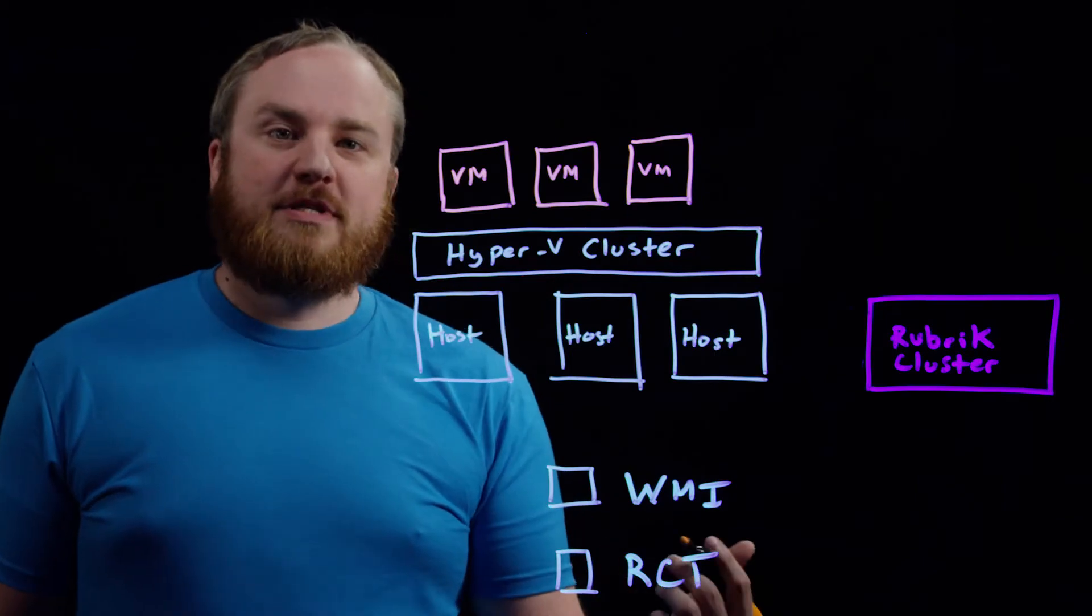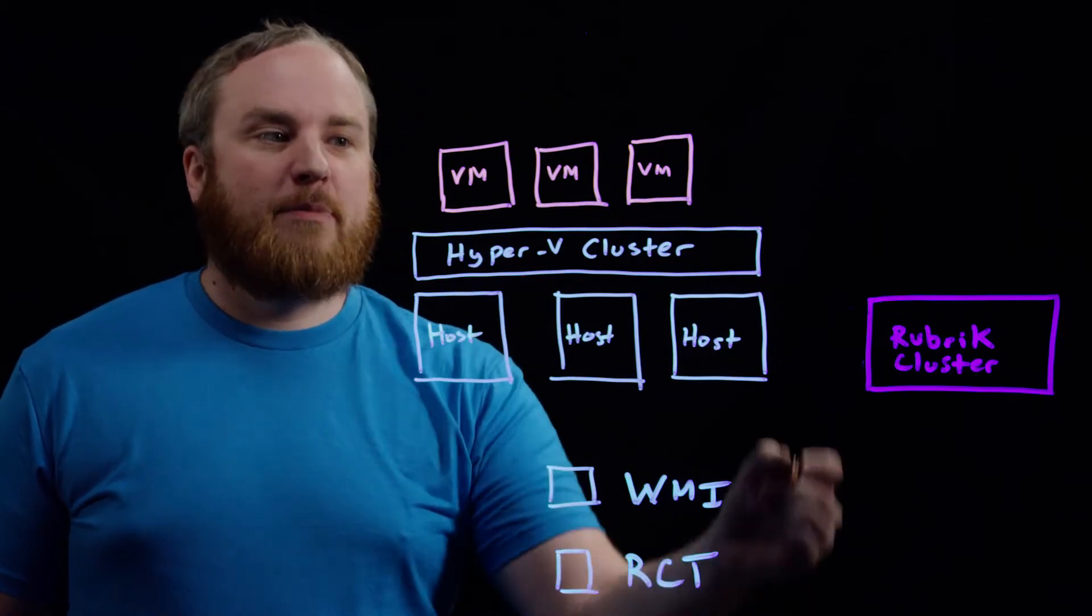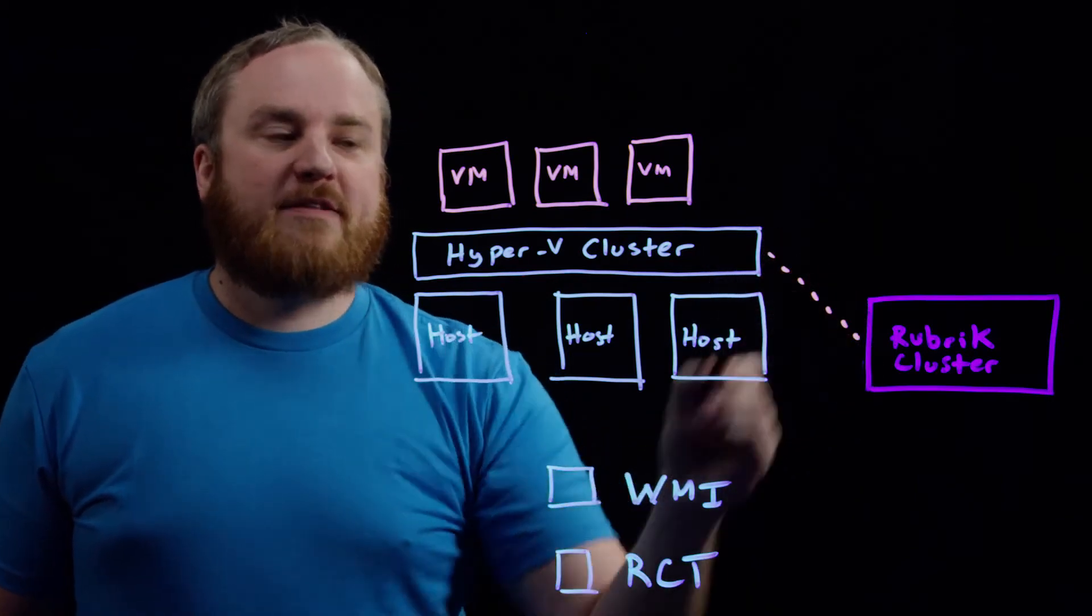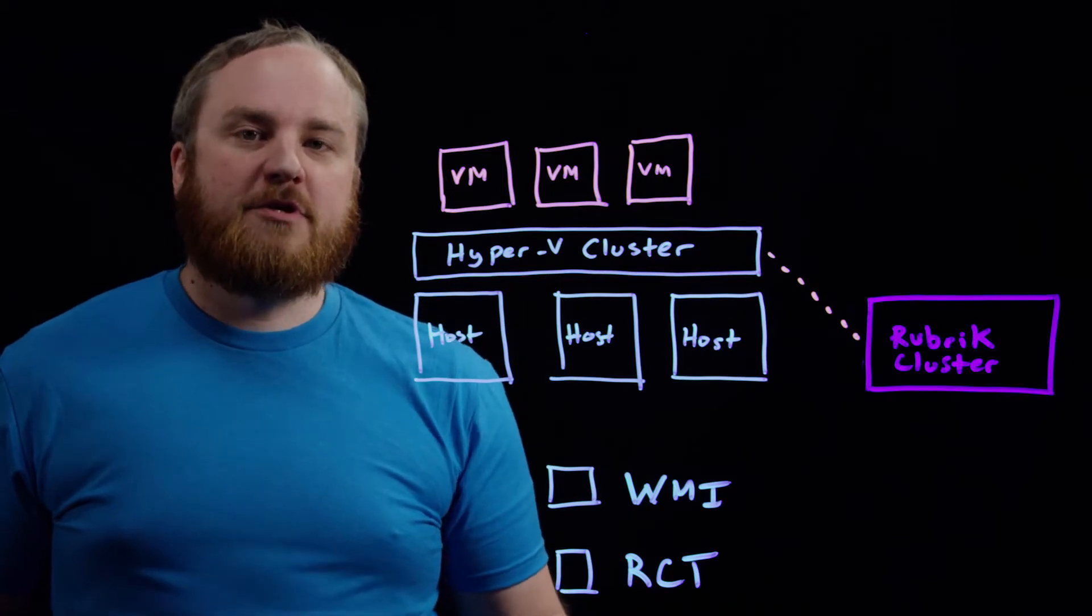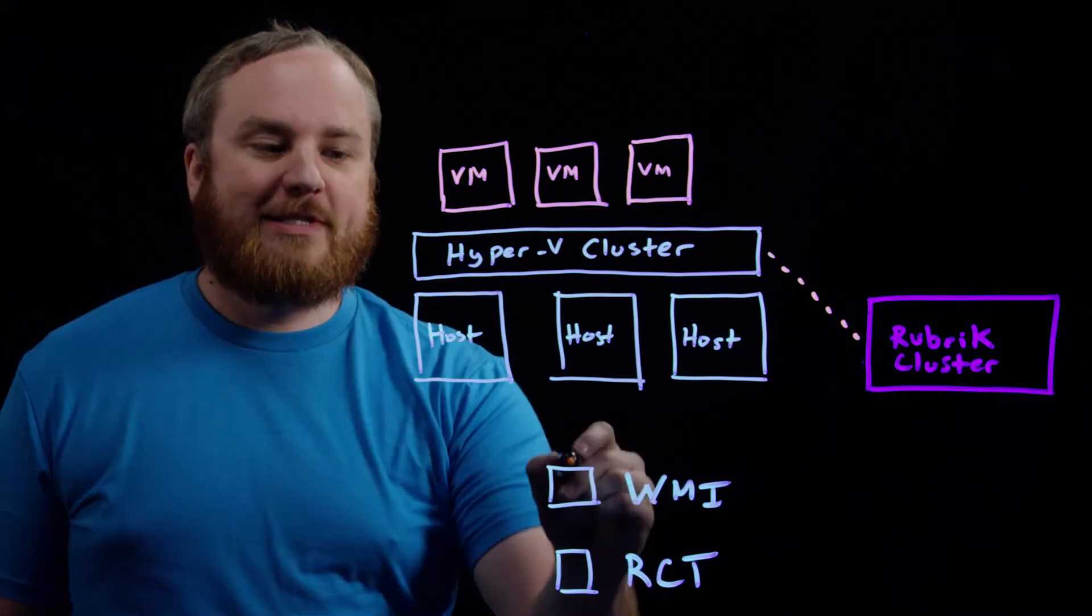So first off, we're talking using WMI, which is the standard APIs to the Hyper-V cluster. And that's where Rubric can actually inventory all the virtual machines and see what's going on in your environment. So we can check that box.